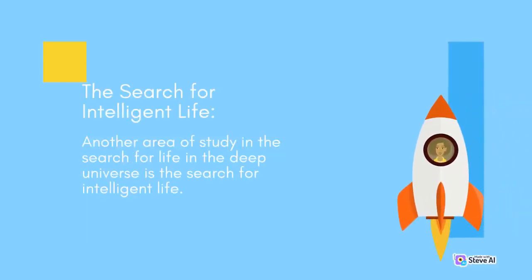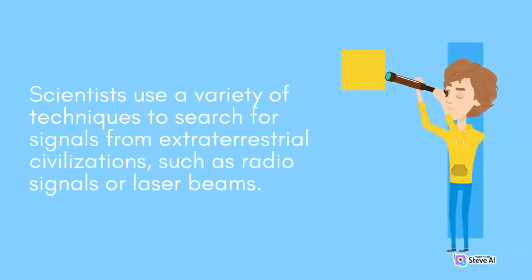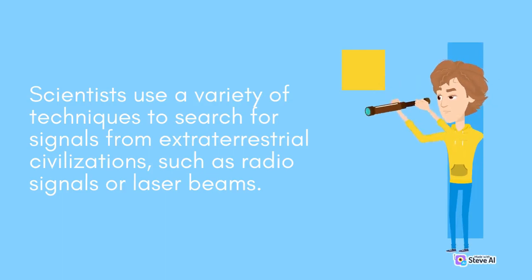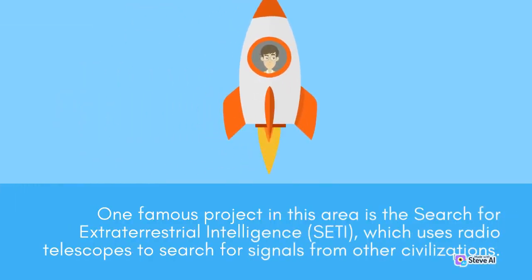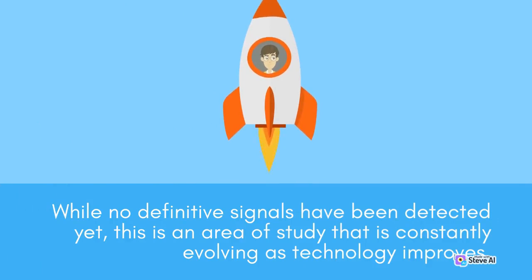Another area of study in the search for life in the deep universe is the search for intelligent life. Scientists use a variety of techniques to search for signals from extraterrestrial civilizations, such as radio signals or laser beams. One famous project is the Search for Extraterrestrial Intelligence, SETI, which uses radio telescopes to search for signals from other civilizations. While no definitive signals have been detected yet, this is an area of study that is constantly evolving as technology improves.